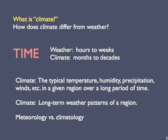A useful definition of climate is the typical temperature, precipitation, humidity, prevailing winds, etc., in a given region over a long period of time. Put another way, climate is the long-term weather pattern of a region. Weather is the focus of meteorology; climate is the focus of climatology.